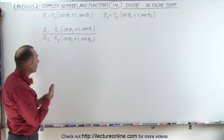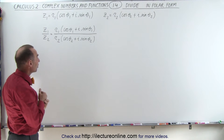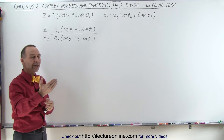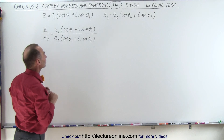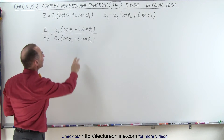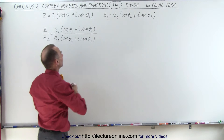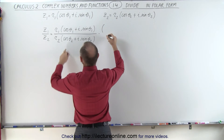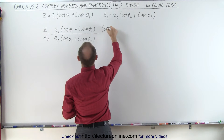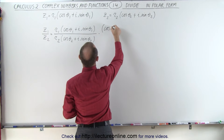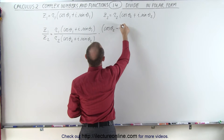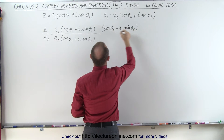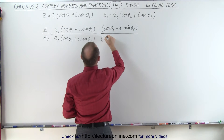When we divide complex numbers, we're going to need to multiply the numerator and the denominator of that fraction by the conjugate of the denominator. In the numerator we're going to get the cosine of theta 2 minus i times the sine of theta 2, and of course the very same thing in the denominator.